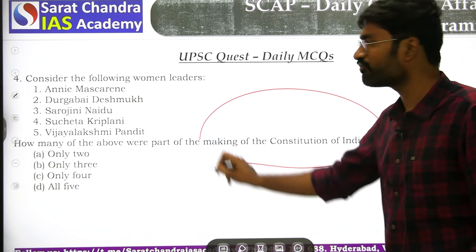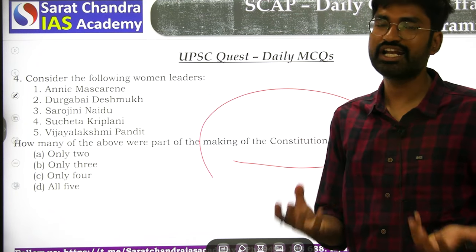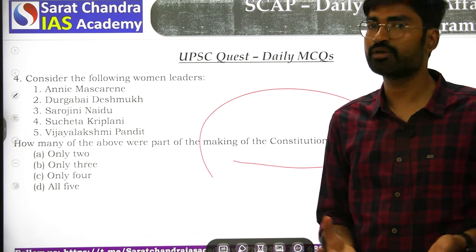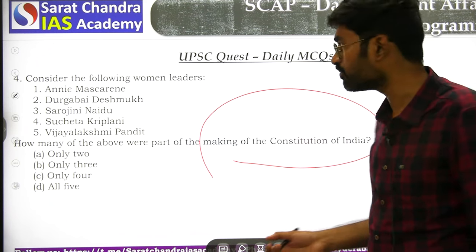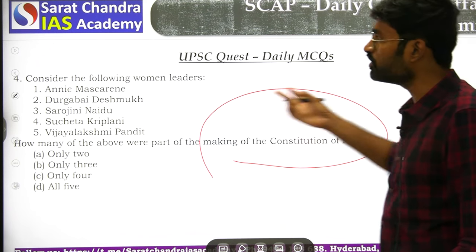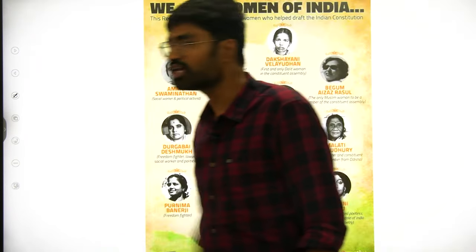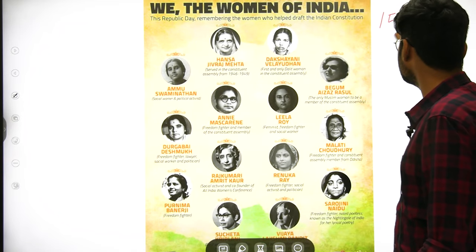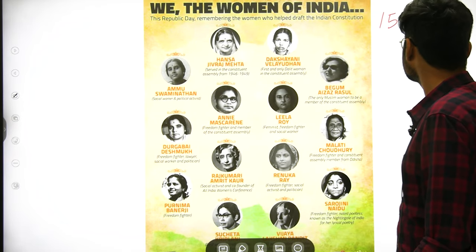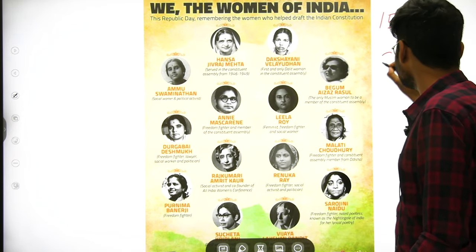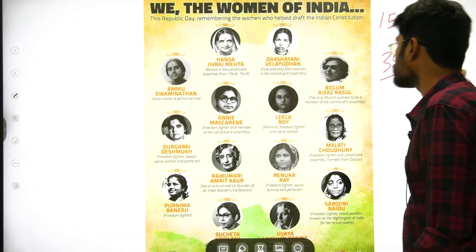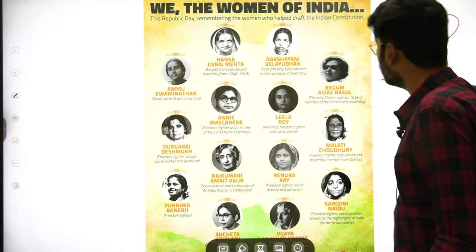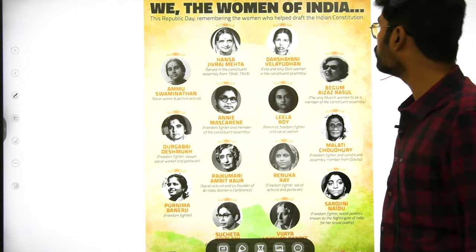The next question is about women in the making of the Constitution. There were women members in the Constituent Assembly. Out of 389 members in the Constituent Assembly, there were 15 women members.